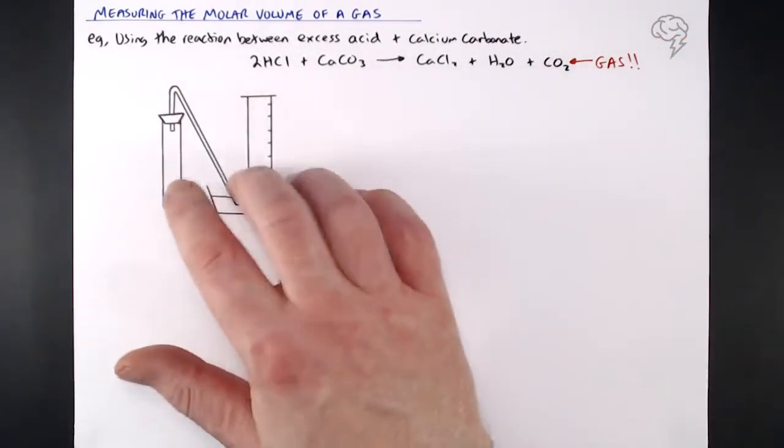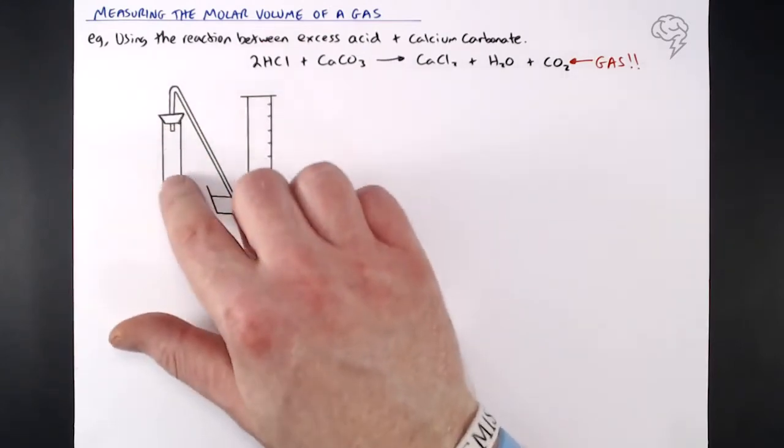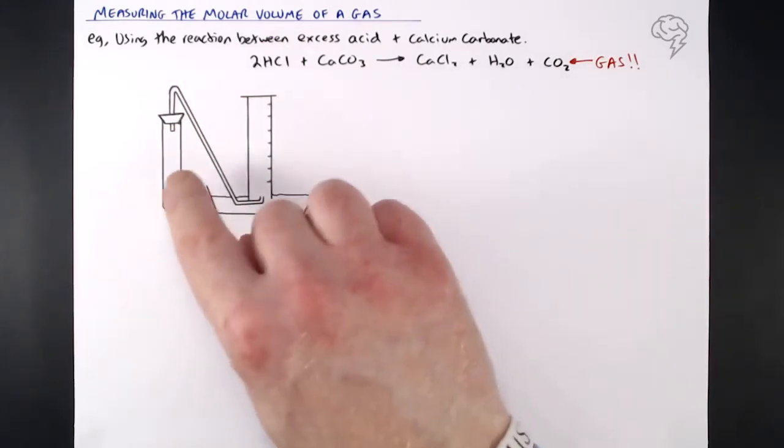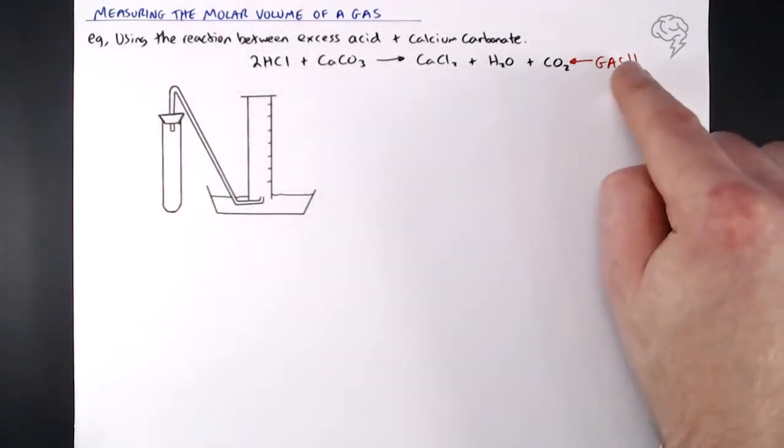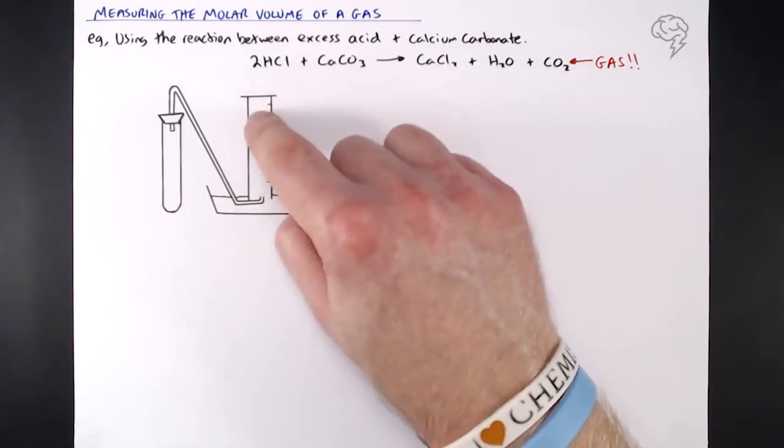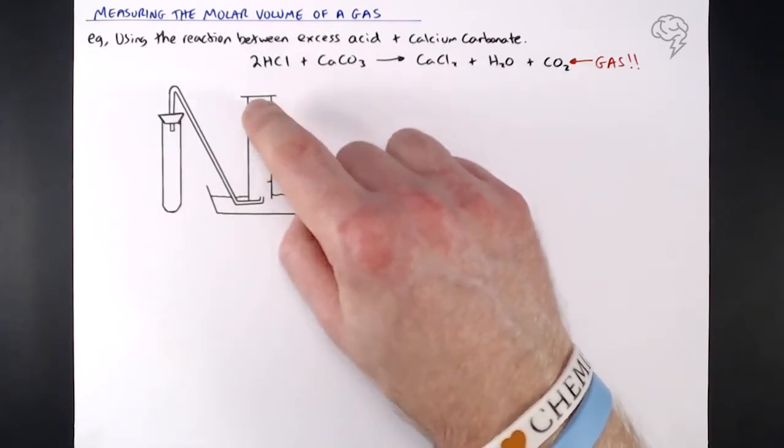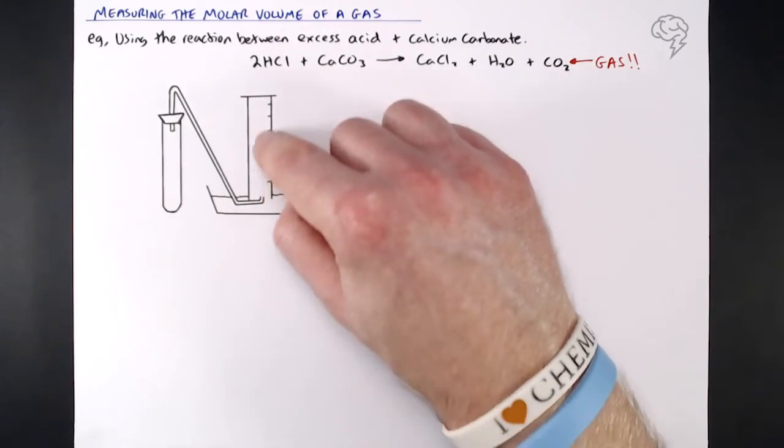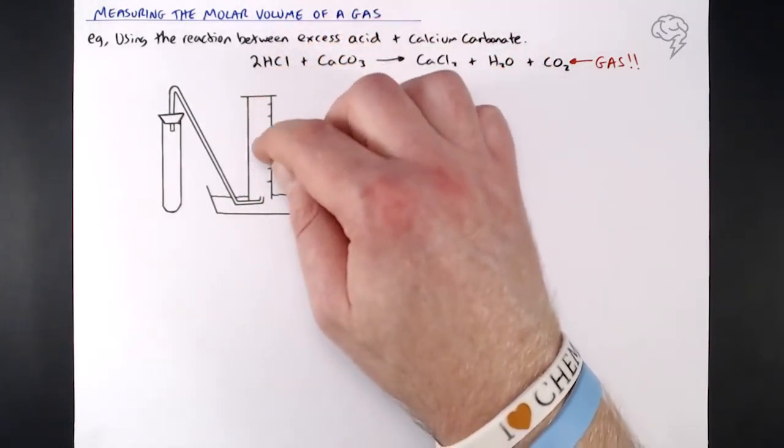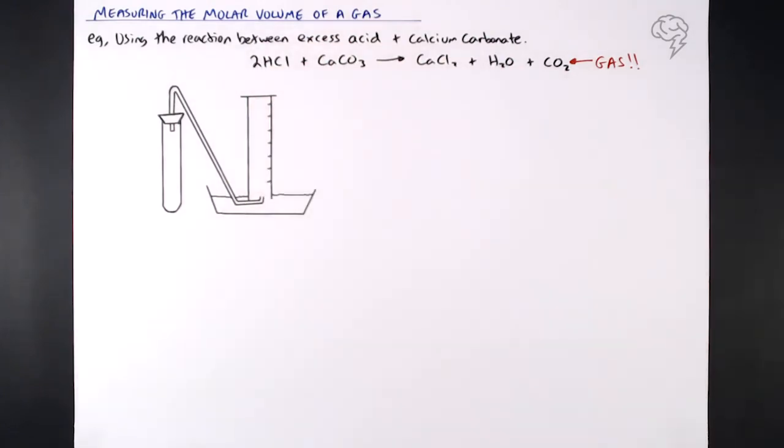On the left hand side here, we've got our equipment. Standard kind of boiling tube, this is where a reaction is going to take place. Any gas that's given off, CO2, is actually going to fill or start filling this full inverted measuring cylinder. So this is filled with water, as the gas goes through, then the water is displaced, and we can measure the volume of gas given off by this reaction.